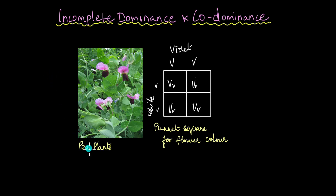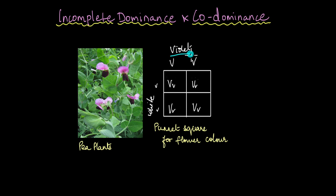We all know that Mendel was working with pea plants and performing his observations by crossing different types of pea plants. One of his experiments involved crossing a violet flower plant with a white flower plant, in which case the violet color was dominant over the white color phenotype.